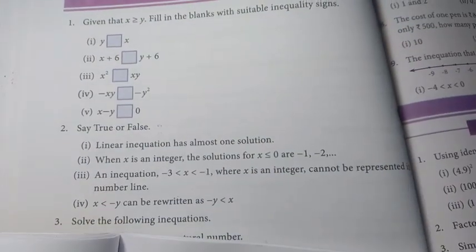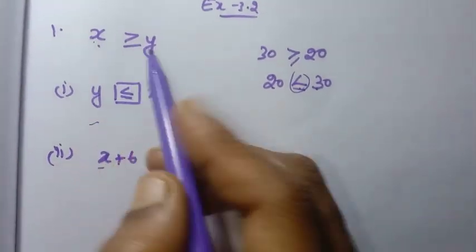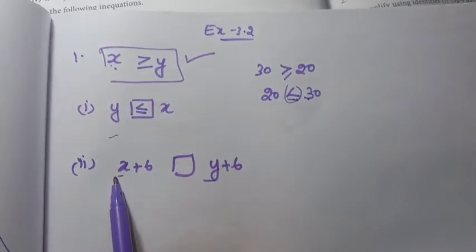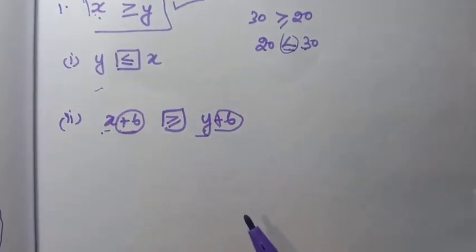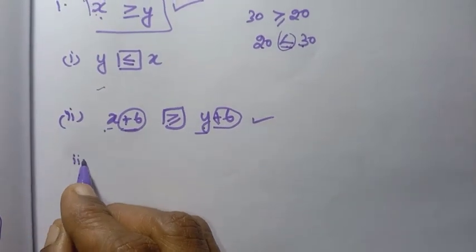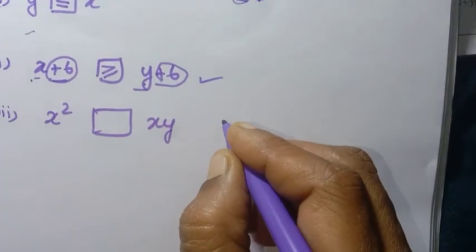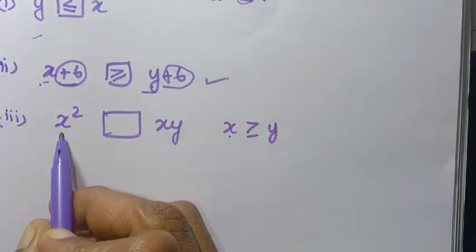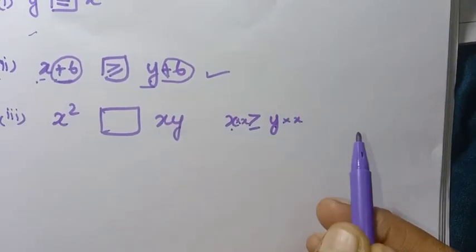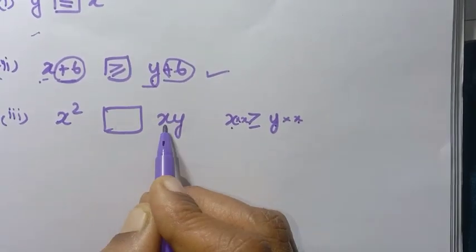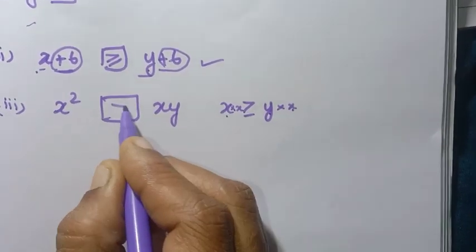Second sum: x plus 6 box y plus 6. Here x and y are the same — x is greater than or equal to y. Adding 6 to both sides: by the addition rule, the symbol does not change. So x plus 6 is greater than or equal to y plus 6. Addition of the same positive number on both sides does not change the inequality.